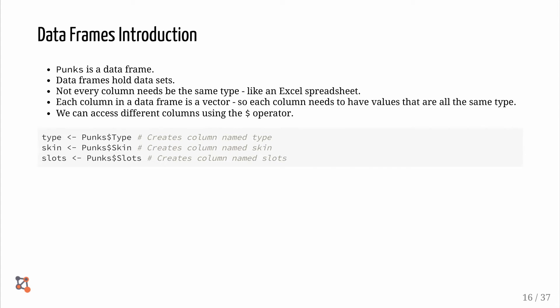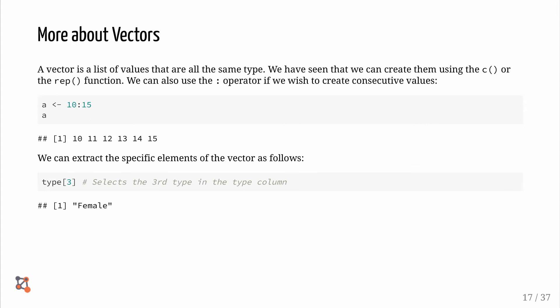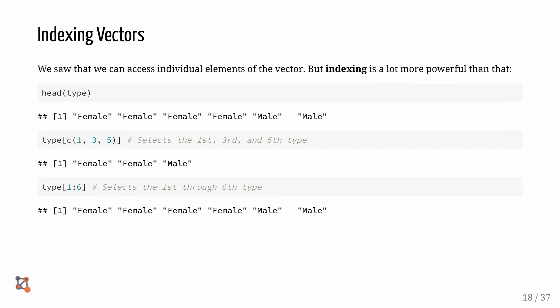Now let's have an introduction to data frames. Punx is a data frame. Data frames hold data sets. Not every column needs to be the same type like an Excel spreadsheet. Each column in a data frame is a vector. So each column needs to have values that are all the same type. We can access different columns using the dollar sign operator. In the previous slide, we have seen that we can create a vector using the C command or the rep function. We can also use the colon operator if we wish to create consecutive values. We can extract the specific elements of the vector as follows. We just access the individual elements of the vector, but indexing is a lot more powerful than that.